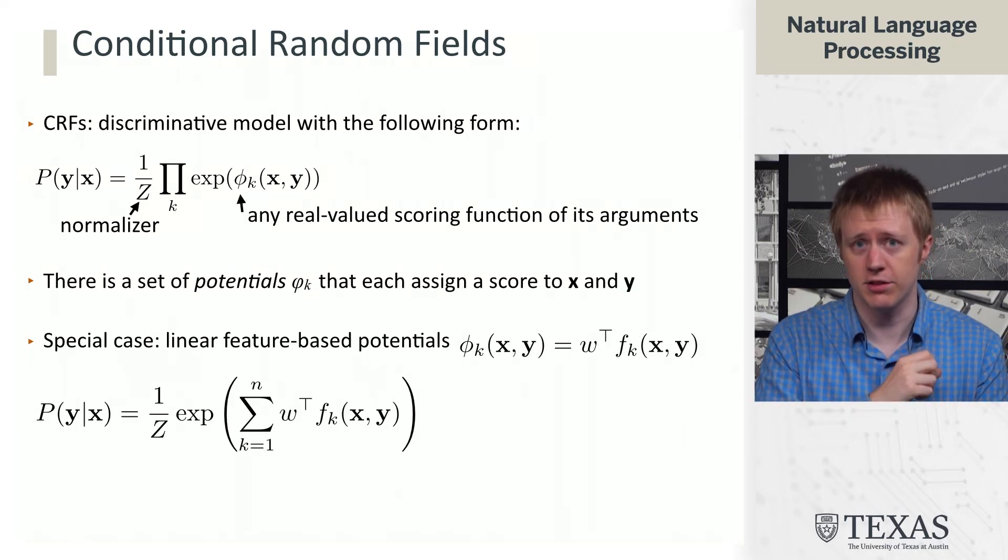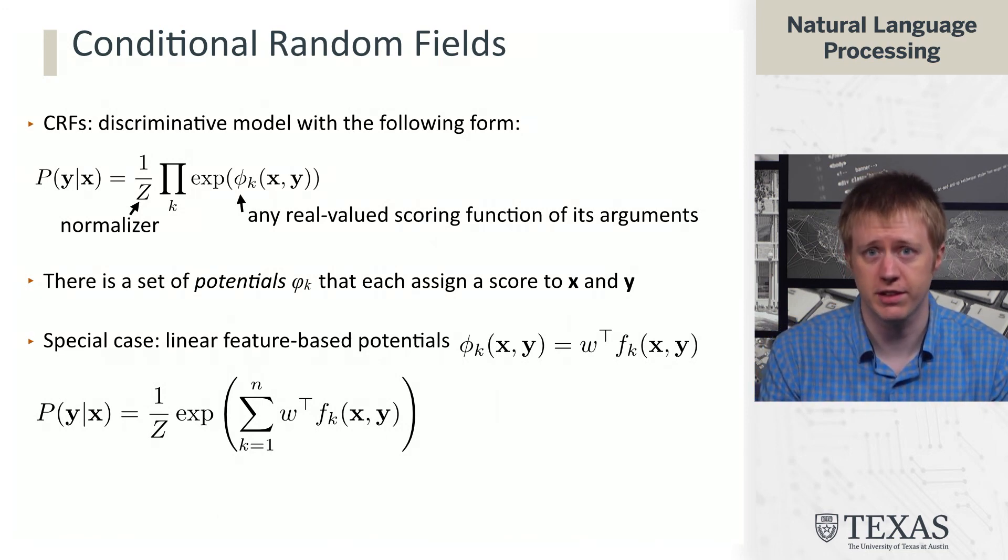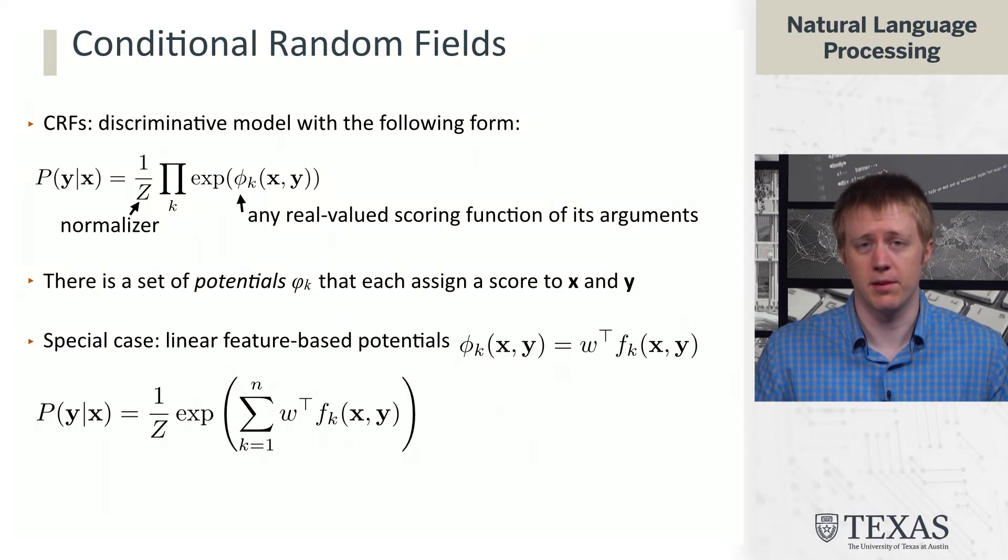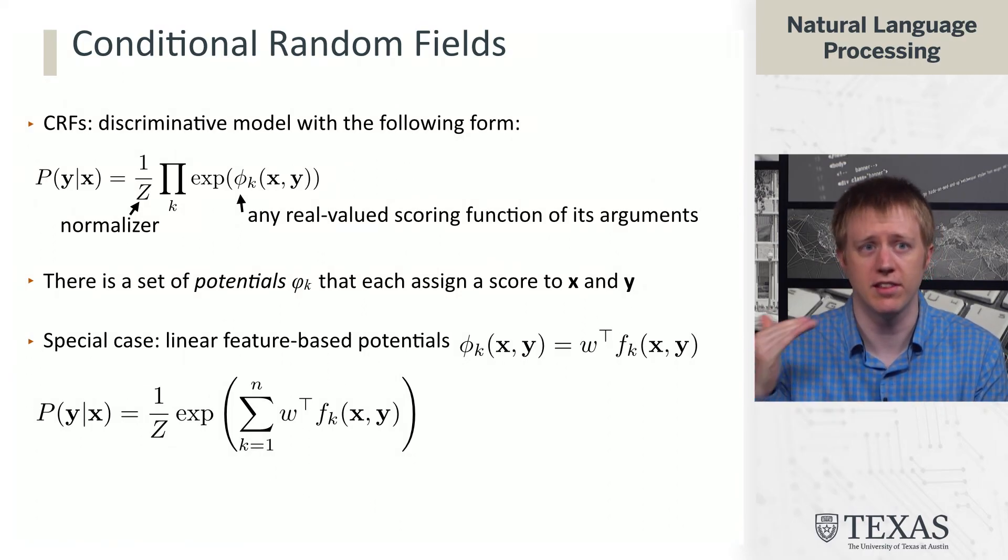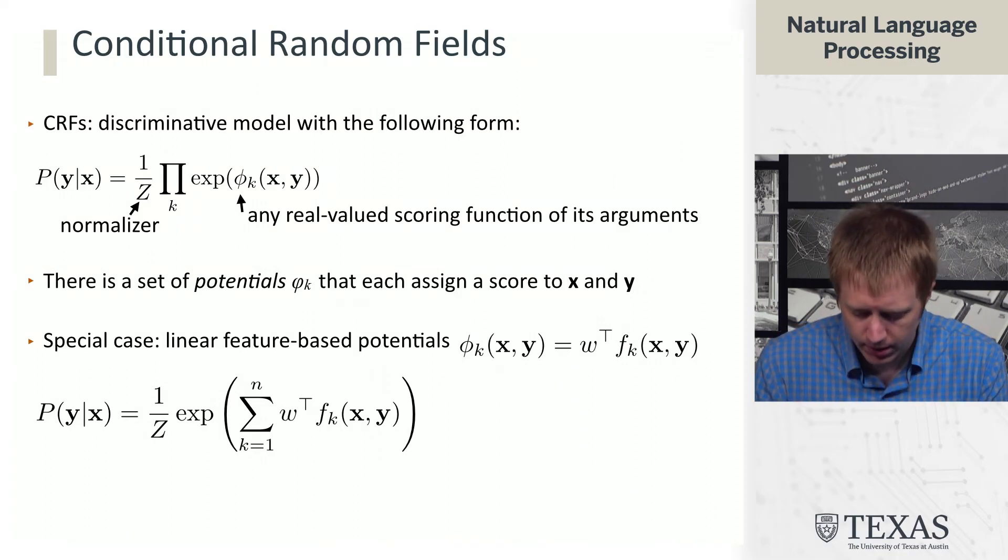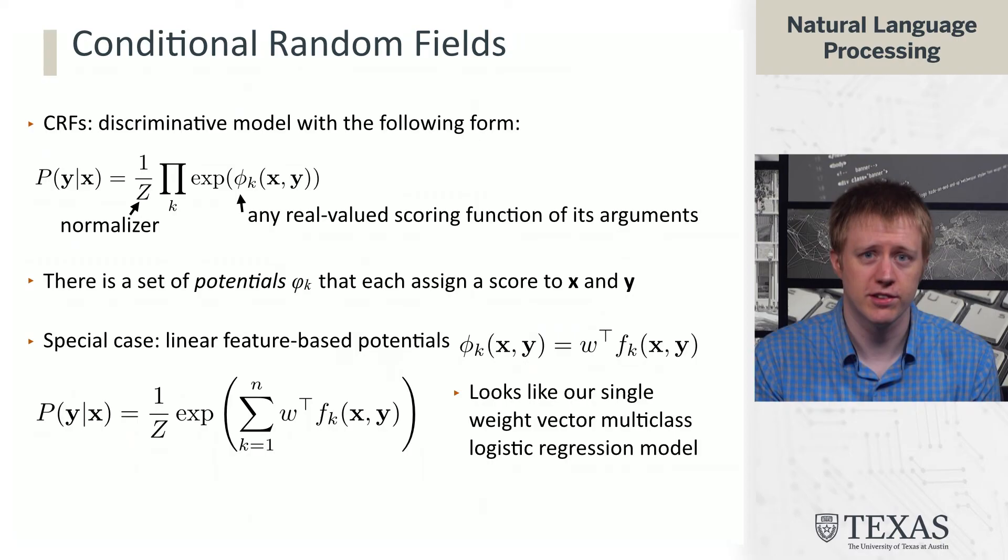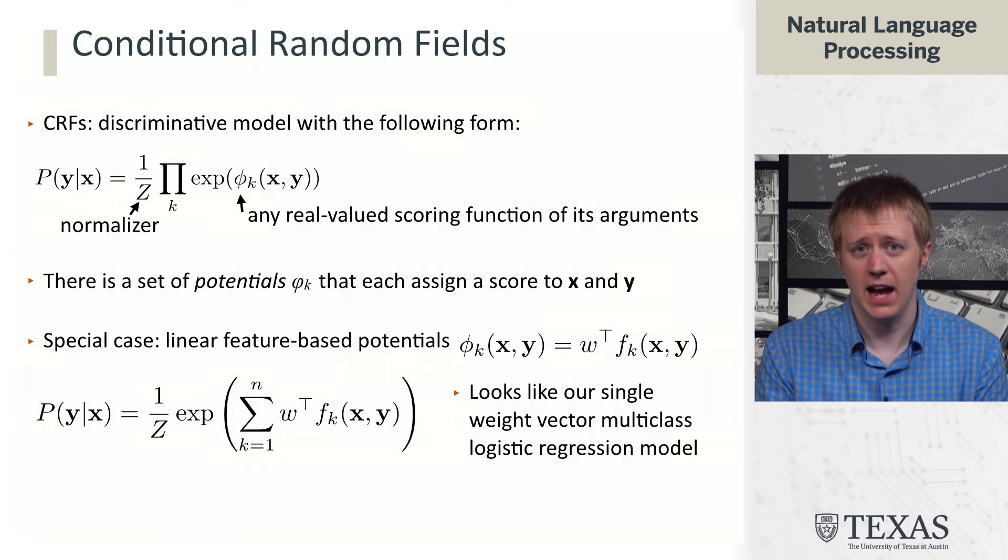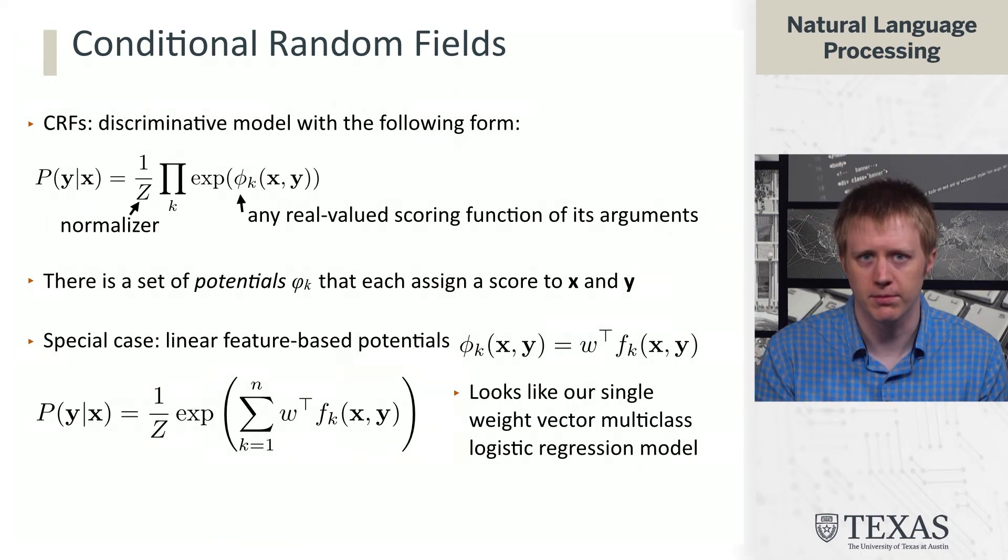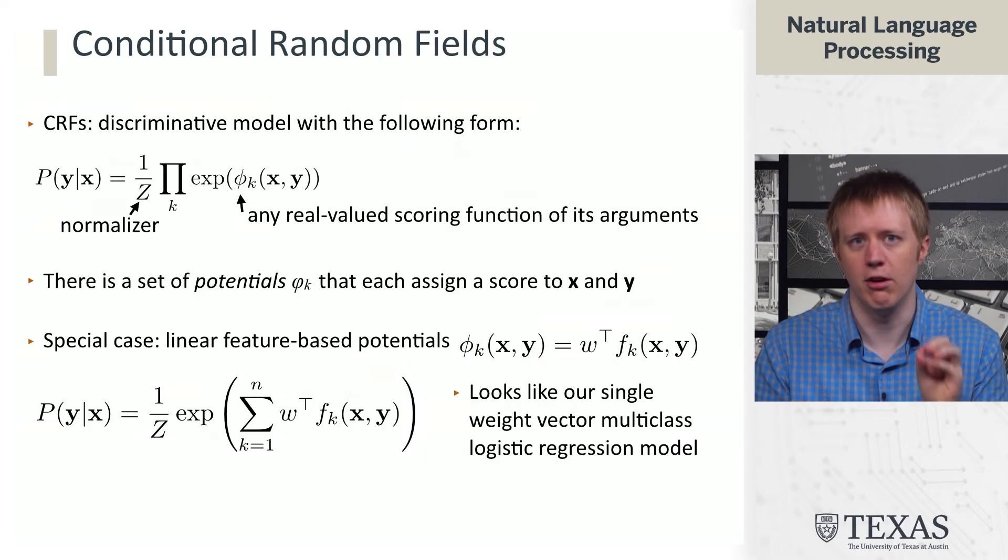We are going to specifically think about the case of linear feature-based potentials. And so when I talk about using linear features, this is going to kind of call back to the ideas from linear classification. We are going to think about having a set of features, FK, that get extracted based on X and Y. So this is going to be something like a kind of vector of indicators. And then we have our weight vector, W. And so in this form we can rewrite the CRF in the following form. And this is a special case of the more general model. And the cool thing about this is setting the Z aside, if we just focus on this term inside the exponential, this doesn't look so different from how we were dealing with multiclass logistic regression.